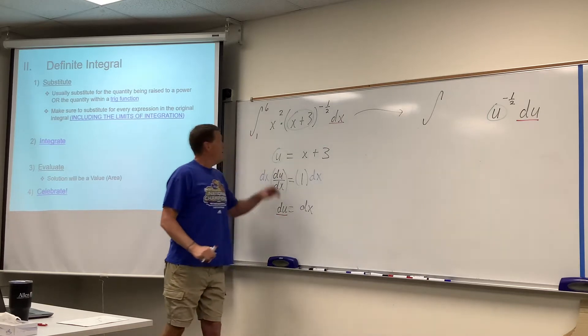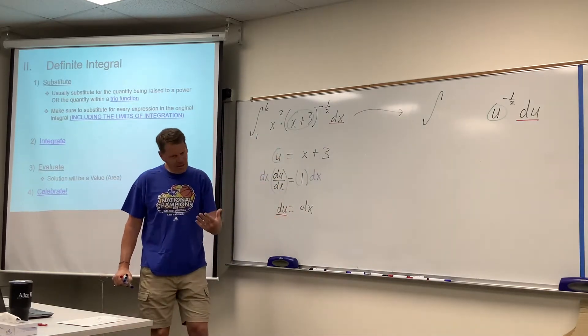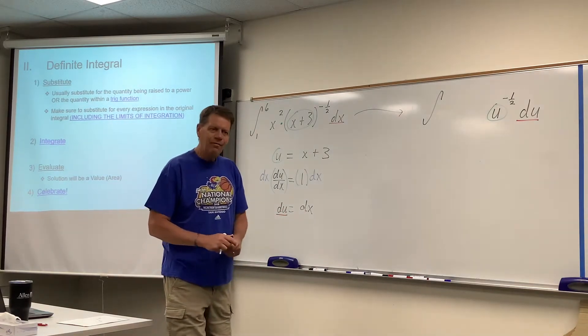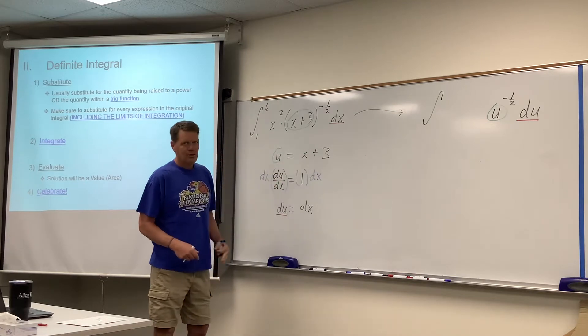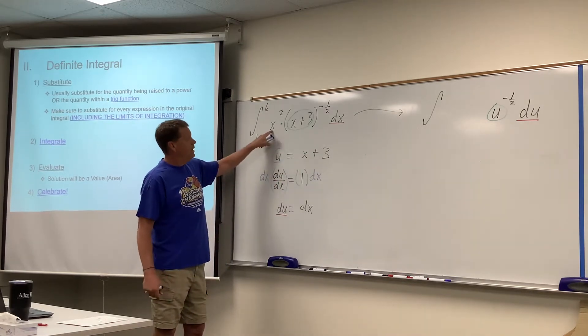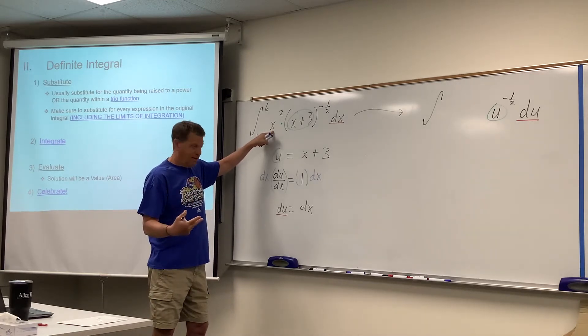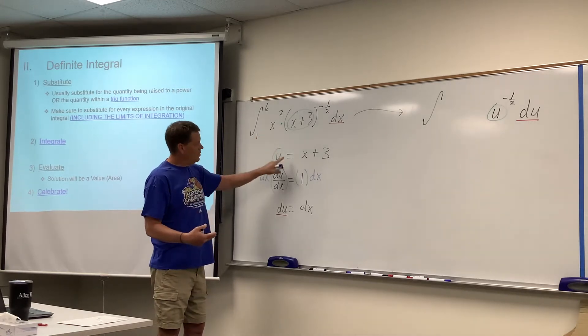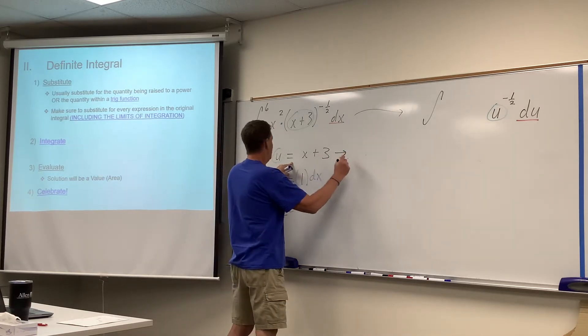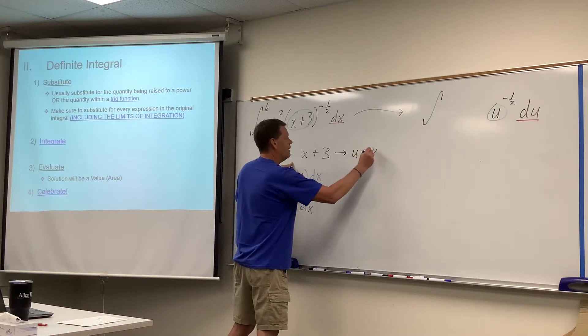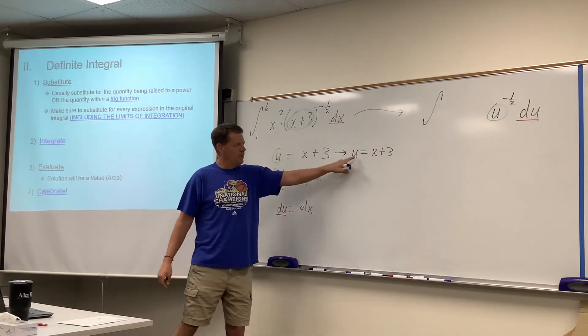You will notice though that the x squared sitting out here did not somehow fall in our lap. Sometimes it does. It did not happen this time. If that happens after you build that dx from your original substitution and you have an additional expression sitting out here, that's where you need to build it. You need to construct it. And it's always constructed from the original substitution. So I always bring this over and go, alright, I need to build me an x squared from this relationship.